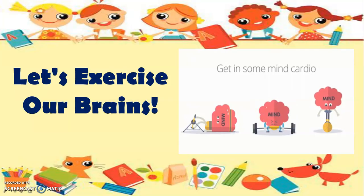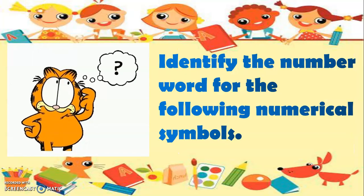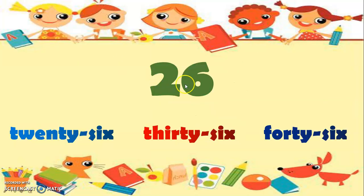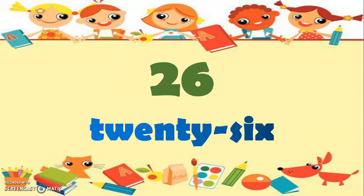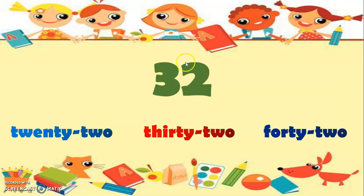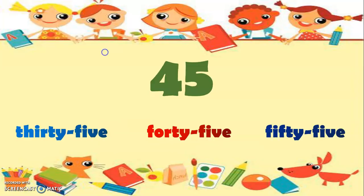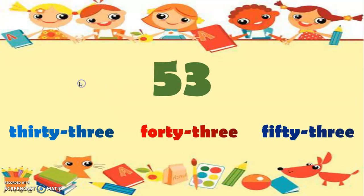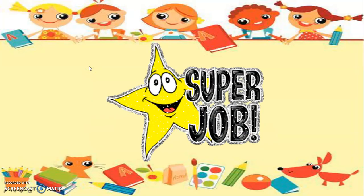So now let's exercise our brains. Let us identify the number word for the following numerical symbols. What is this — is it 26, 36, or 46? The answer is 26. Next, what is this numerical symbol — is it 22, 32, or 42? The answer is 32. Next, is this 35, 45, or 55? The answer is 45. And what is this numerical symbol — 33, 43, or 53? The answer is 53. Great job! Now you already know how to read and write numbers from 0 to 100.